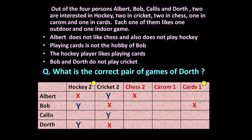We know the hockey player likes playing cards. Bob and Dorth play hockey, but Bob doesn't like playing cards, so Dorth is playing cards. Albert plays cricket and doesn't like chess; since cards is taken by Dorth, Albert must play carom. Carom and cards are each played by one player, so chess must be played by Bob and Kallis — which fits since they each play one outdoor and one indoor game.